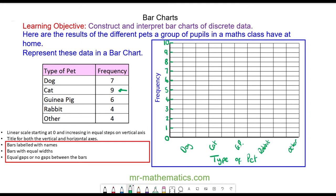You can see the dog has a frequency of 7, so I'll draw a bar that's 7 units high in the dog category. The cat has a frequency of 9, so I'll draw a bar that's 9 units high.